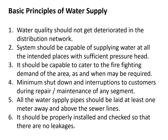Before we discuss water distribution systems at city level, it is worthwhile to understand the basic principles of water supply. Water quality should not deteriorate in the distribution network. The system should supply water at all intended places with sufficient pressure, cater to firefighting demand in addition to domestic requirements, and ensure minimum shutdown during repairs. All water supply pipes should be laid at least one meter away horizontally and above sewer lines, and checked so that there are no leakages or wastage.